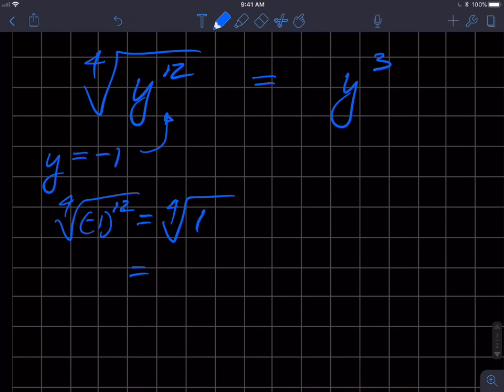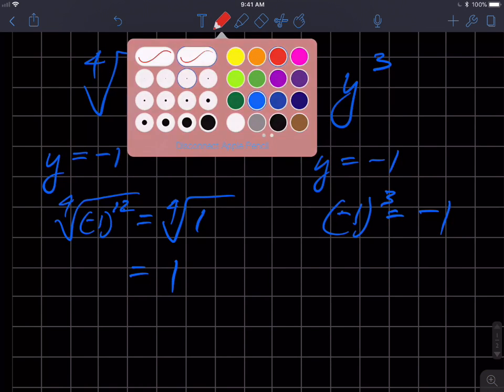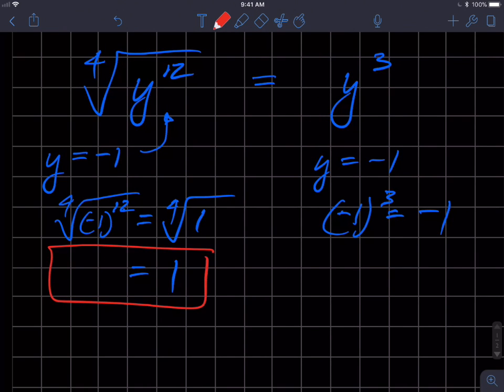If I take the fourth root of 1, what number multiplied 4 times is 1? Well, 1. Over here, if I put y equals negative 1 into this, I get negative 1 cubed, which is negative 1. But over here if I put negative 1 and I get 1, and over here if I put negative 1 and I get negative 1, that means that these guys are not equal, they're not equivalent.